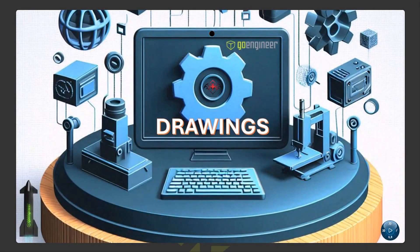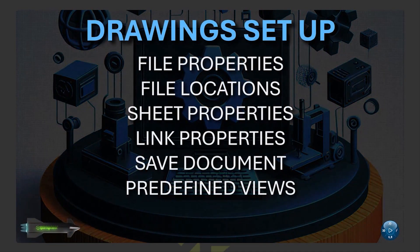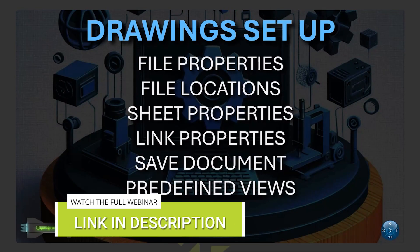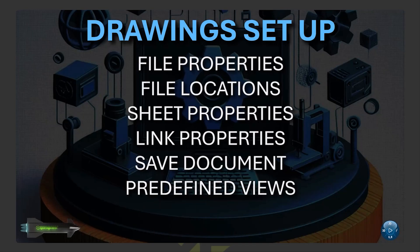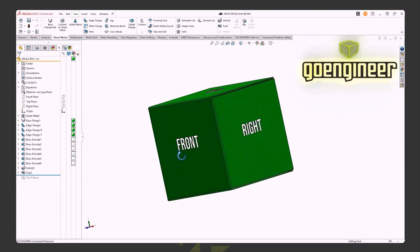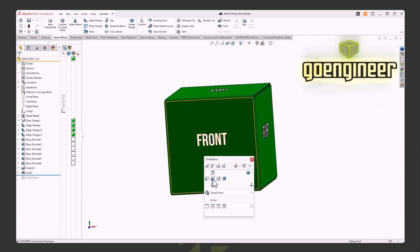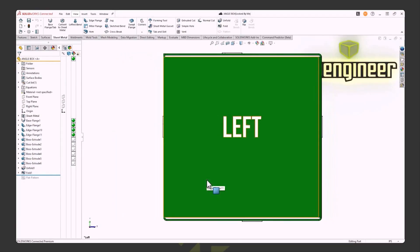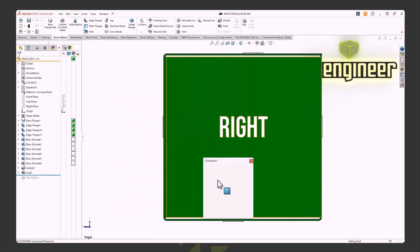In this first section we're going to talk about drawing setup — how to get file properties from our part or assembly to our drawing, file locations SolidWorks uses for document templates, sheet properties, linking properties to our format, saving the document, and predefined views. We have a part file — I've made a cube — and we'll use it to make sure our drawing views are set up properly on our templates. It's a simple sheet metal cube.